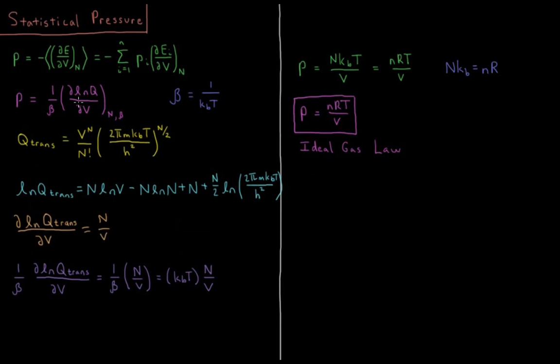Now I take that derivative and I multiply it times 1 over beta, so I get 1 over beta N over V. Beta is 1 over KT, so 1 over beta is KT. So I get for the pressure of my system of ideal gas particles is NKT over V.